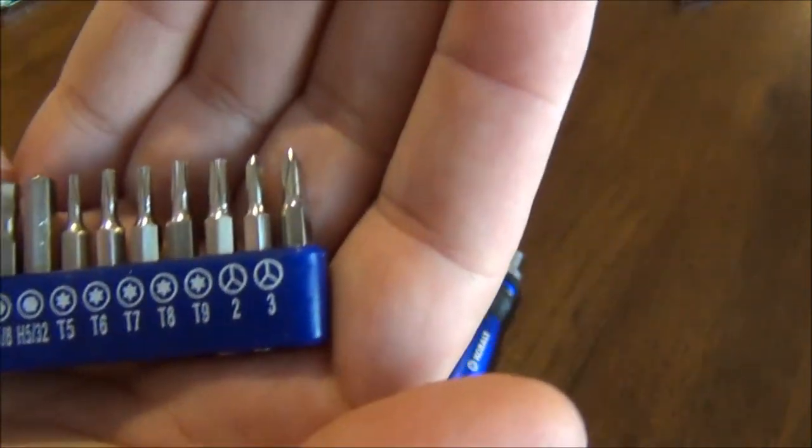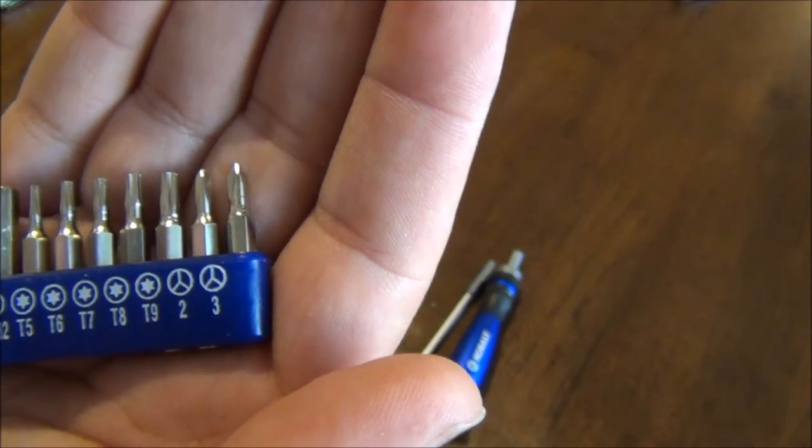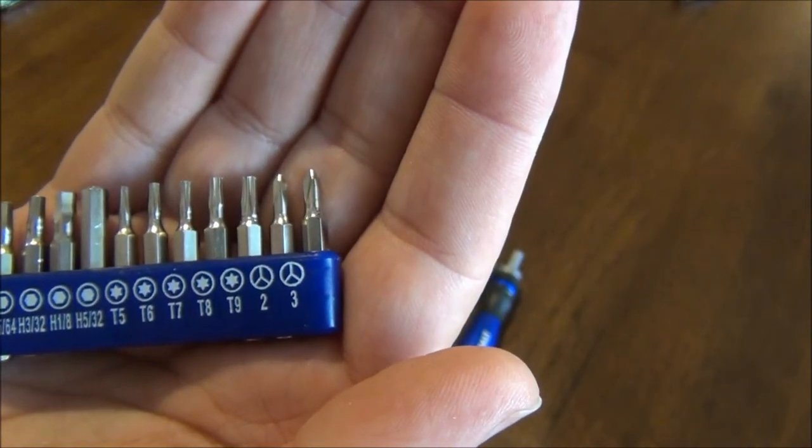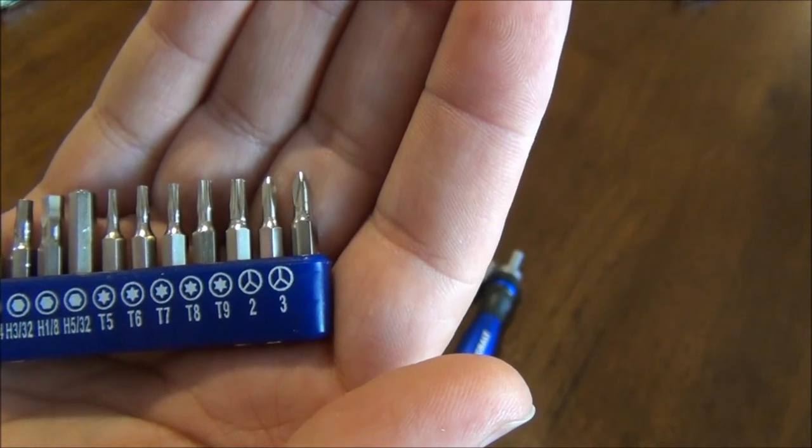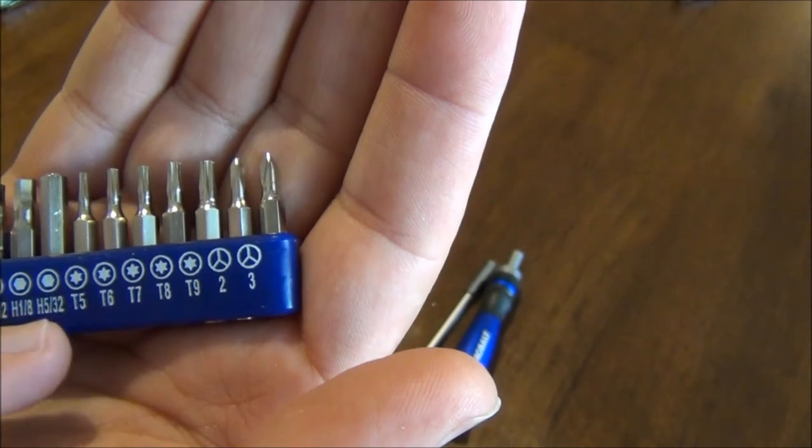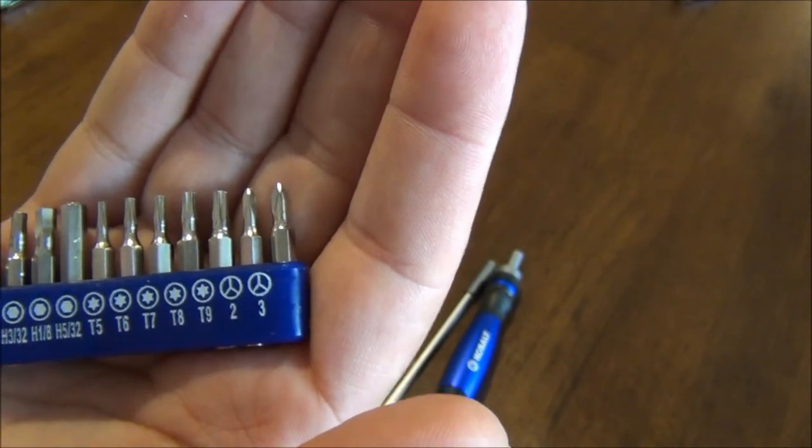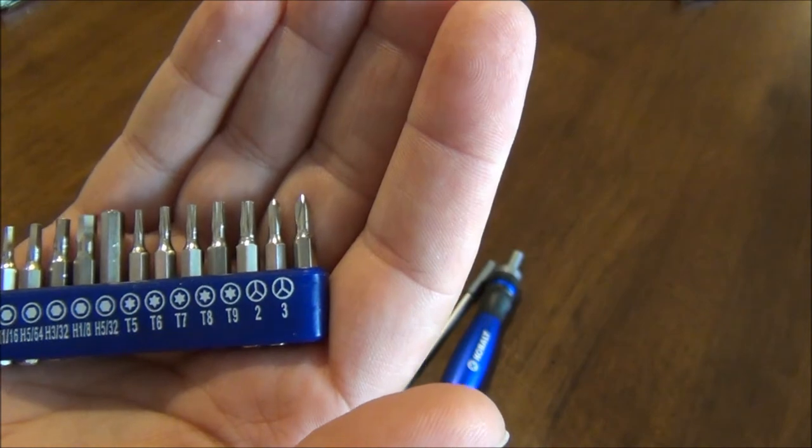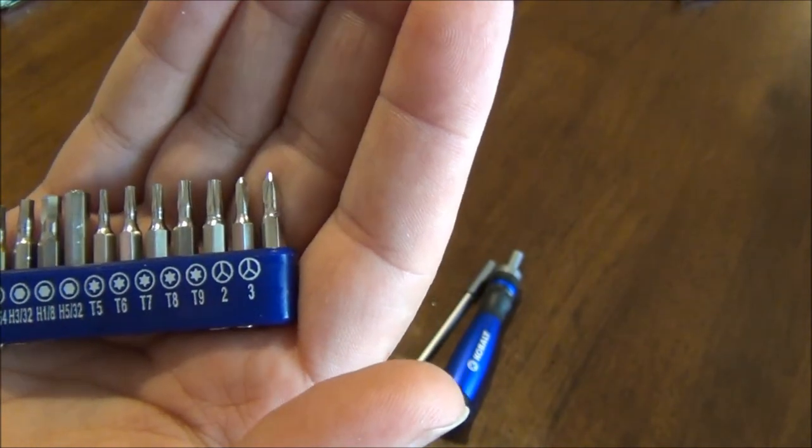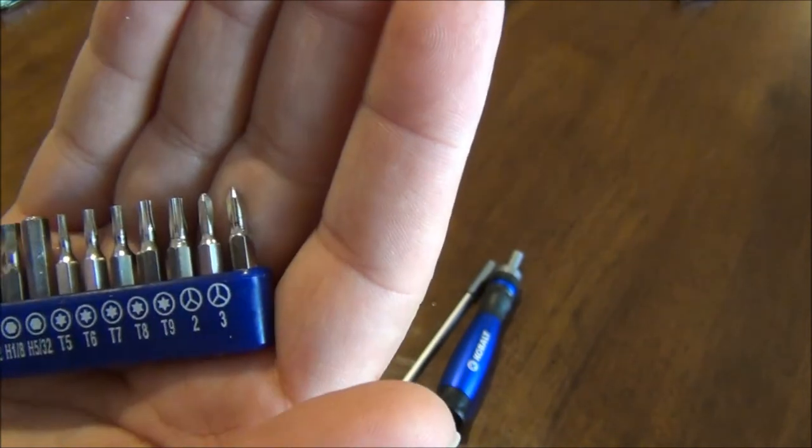Comes with some hex bits, which always come in really handy, especially for you knife guys when you take apart your stuff. It's kind of limited in selection, but the T6 and T8 will get a lot of stuff done. T9 is in there as well.